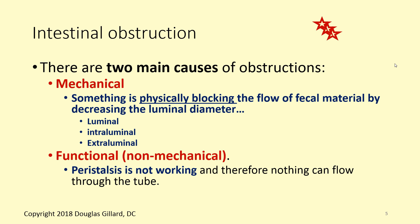There are two main causes of intestinal obstruction: mechanical, which is by far the biggest category, and then functional or non-mechanical obstruction. Mechanical means that something has physically reduced the size of the lumen. Functional basically means that the lumen is okay but peristalsis is broken.